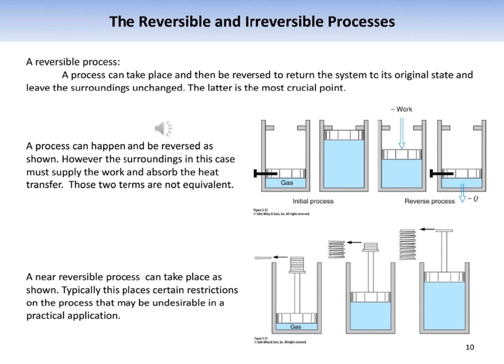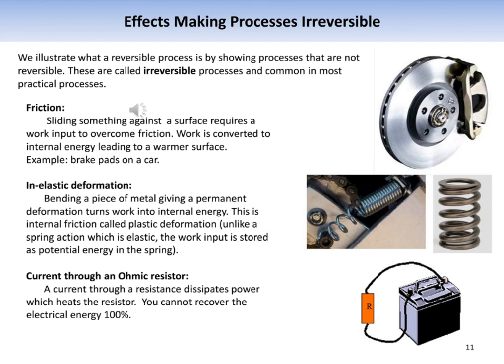In contrast, if the piston is loaded with many small weights slid off one at a time, we approach a reversible process — at each level during the reverse process a small weight can be placed back without requiring work. As the weights become very small, both the system and surroundings are restored to exactly their initial state. Such a process is a reversible process. There are many factors that make processes irreversible: friction, unrestrained expansion, heat transfer through a finite temperature difference, and mixing of two different substances.